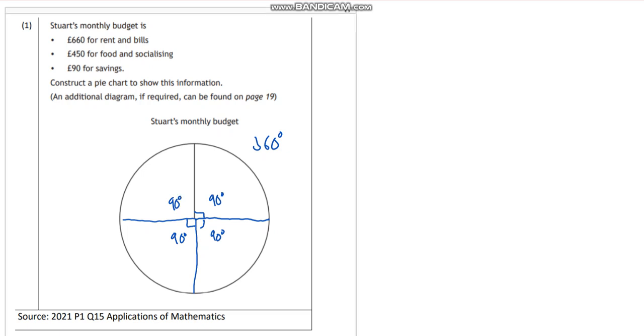A half would be 180 degrees. If I split a quarter into two, that would be 45 degrees, half of 90. If you remember those numbers, that's pretty helpful.